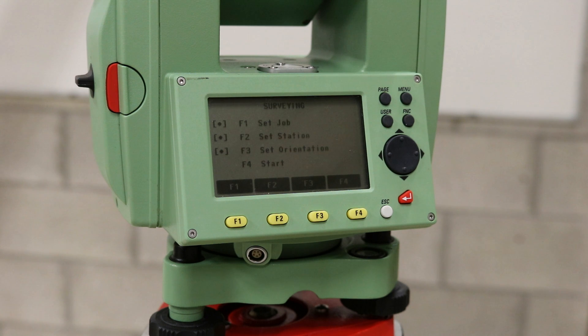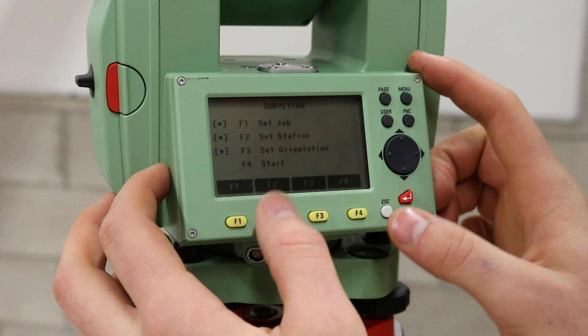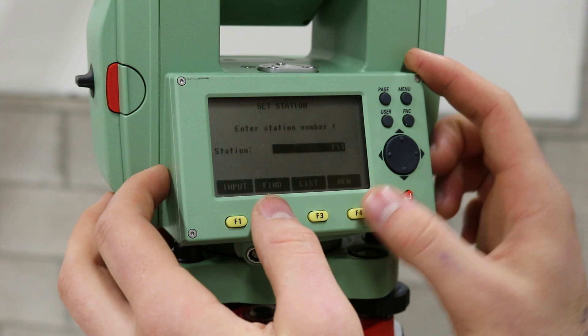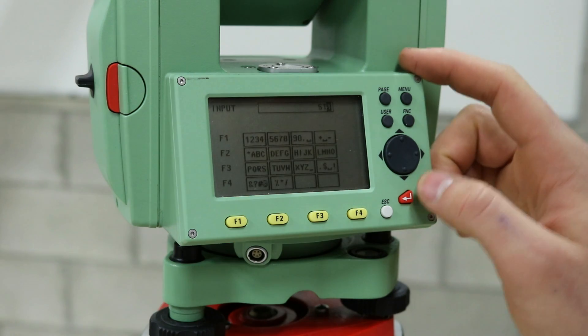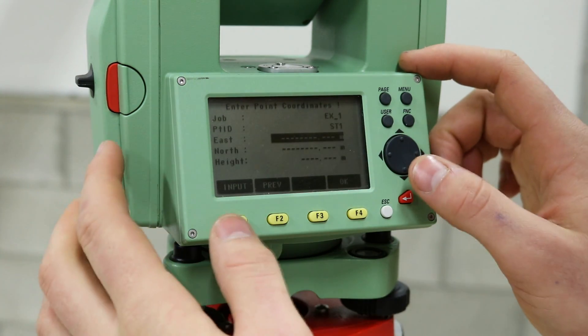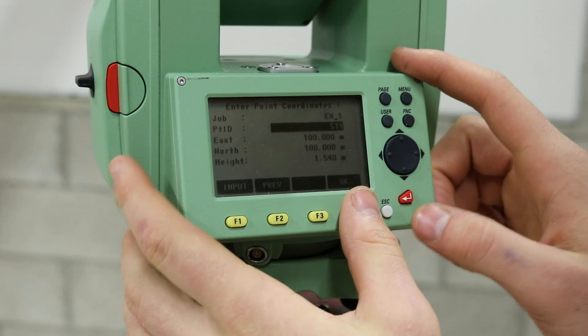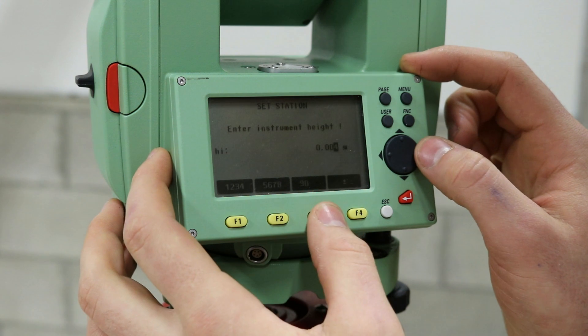If setting up over a known point, enter either the setting out or surveying mode from the programs menu, whichever job it is you wish to complete. A tick should be shown beside the set job section to indicate that the job details have already been entered. Enter set station and input the station name. Again, we will call it ST1. Press enter to confirm the name and enter in the known coordinates of the station. Press the OK function key to save the point.